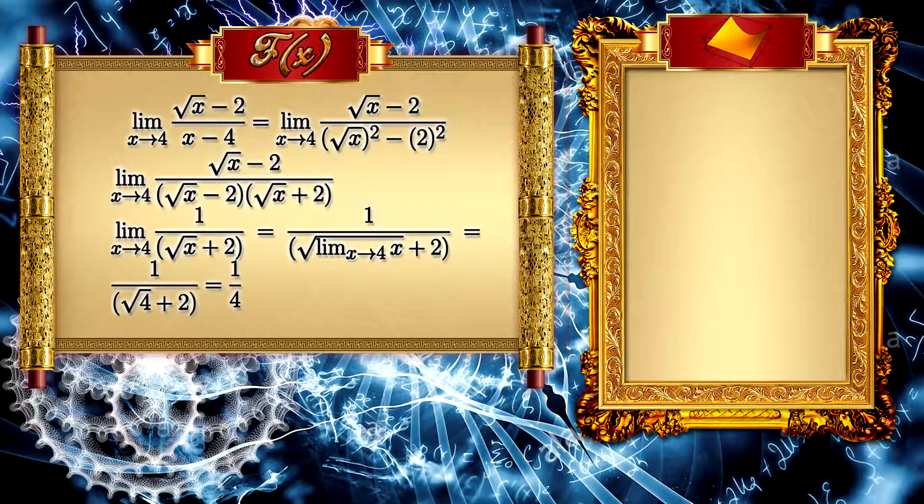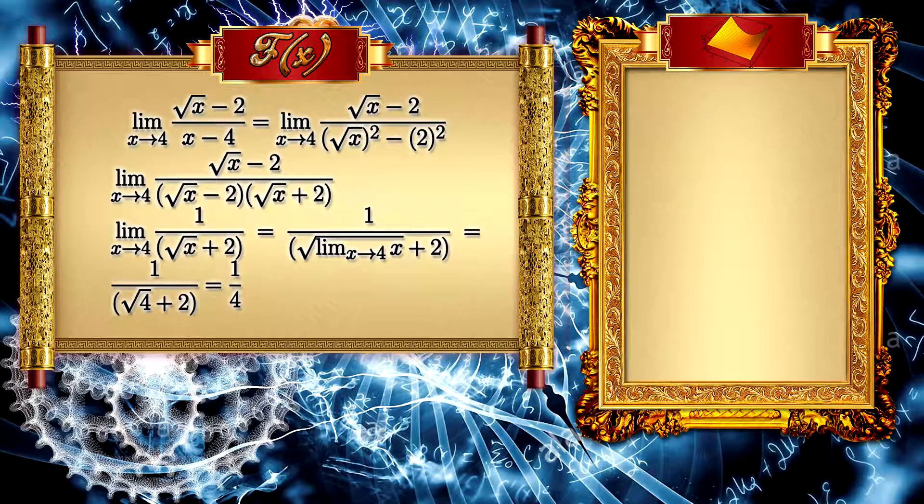Now the limit when x tends to 4 is 4. Now it is only to solve: as √4 is 2, we have that the answer is 1/4.